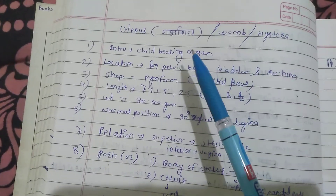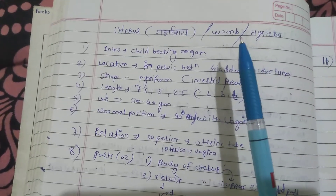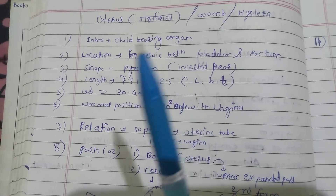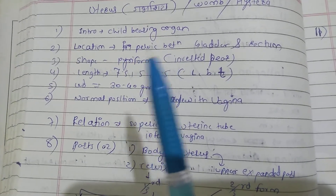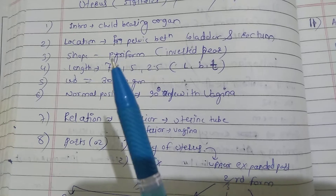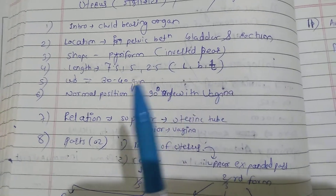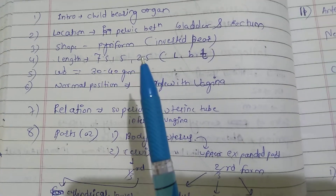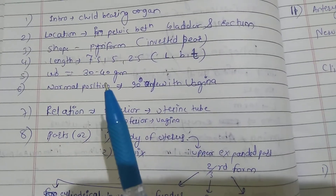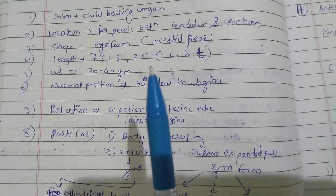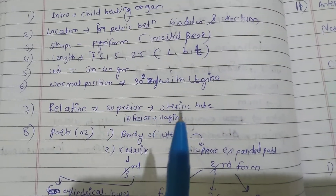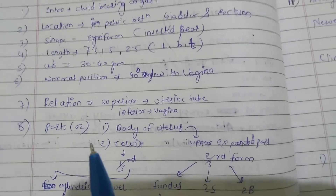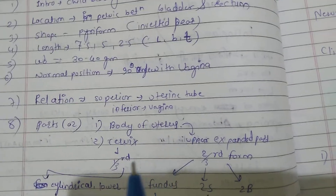The uterus is known as garbhashaya or hysteria. It is the third part of the internal genitalia and is the childbearing organ. Located in the pelvic region between the bladder and rectum. Shape is piriform — inverted pear shape. Length, breadth, and thickness is 7.5, 5, and 2.5 cm. Weight is 30 to 40 grams. Normal position is 90 degrees with the vagina. Superiorly related to the uterine tube, inferiorly to the vagina. It contains two parts: body of the uterus and cervix.